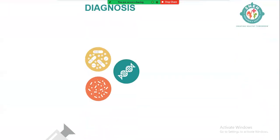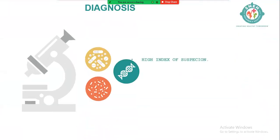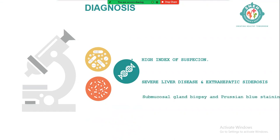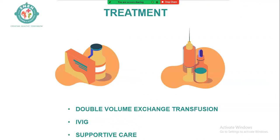Diagnosis requires a high index of suspicion. You need severe liver disease with extrahepatic siderosis — confirmed either by submucosal gland biopsy with Prussian blue staining or by T2-weighted MRI of the liver showing iron deposition. Both will help clinch the diagnosis.